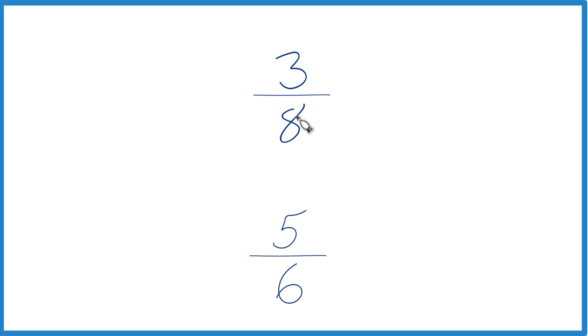So let's take a look at which fraction is greater, 3 eighths or 5 sixths. You could just put it in a calculator, divide 3 by 8, 5 by 6, and compare these two numbers, and you'd see that 5 sixths is the larger fraction.